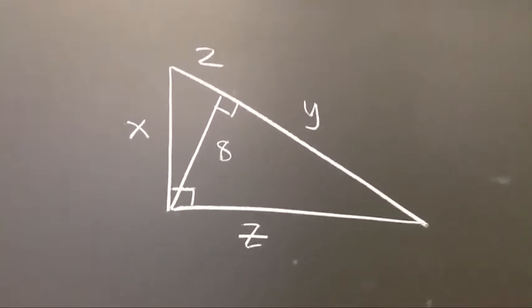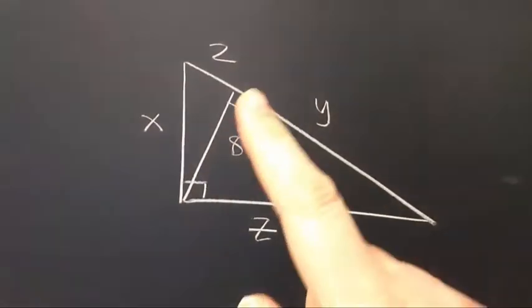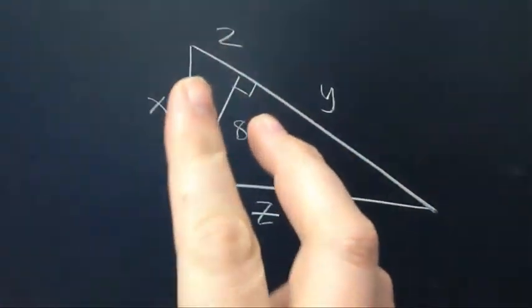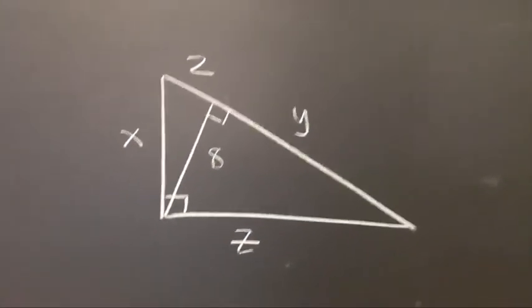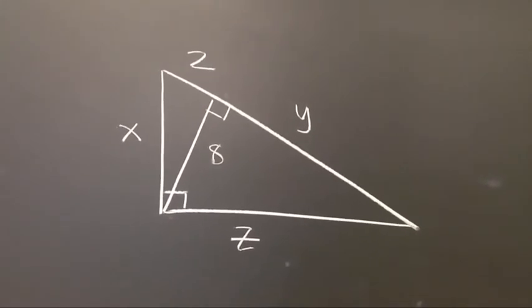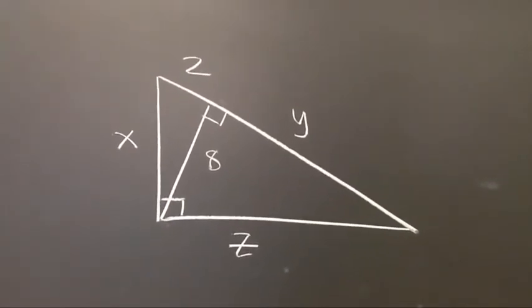Now what we have here is because we've drawn this altitude, we have two additional right triangles making a total of three. And all three right triangles are similar to each other.